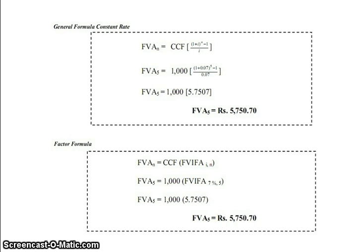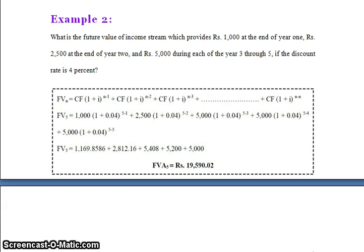We can apply any one formula to solve the problem — it is not necessary to apply all three. Example 2: What is the future value of an income stream that provides ₹1,000 at the end of Year 1, ₹2,500 at the end of Year 2, and ₹5,000 during each of Years 3 through 5, if the discount rate is 4%?